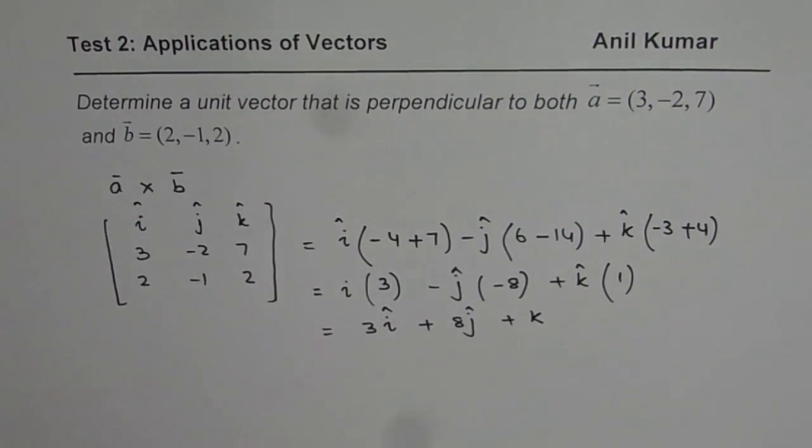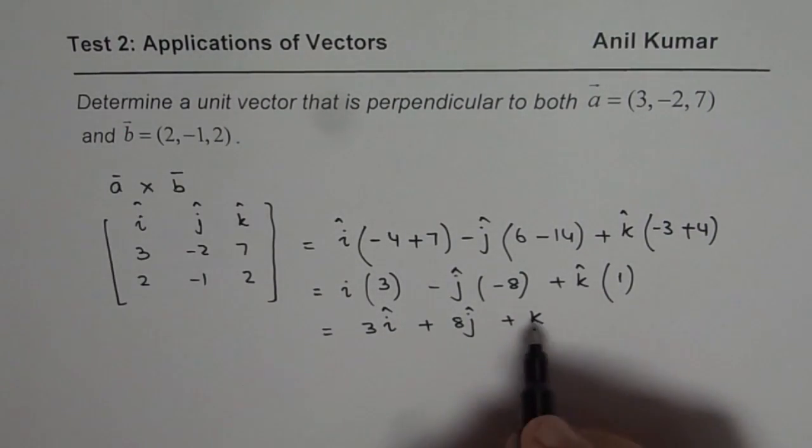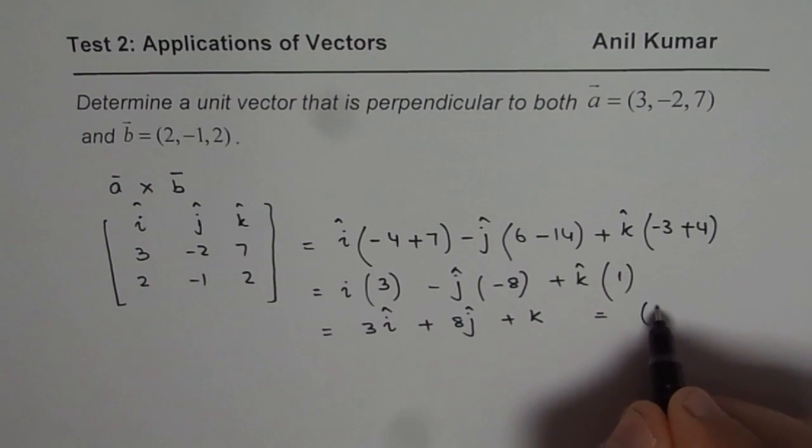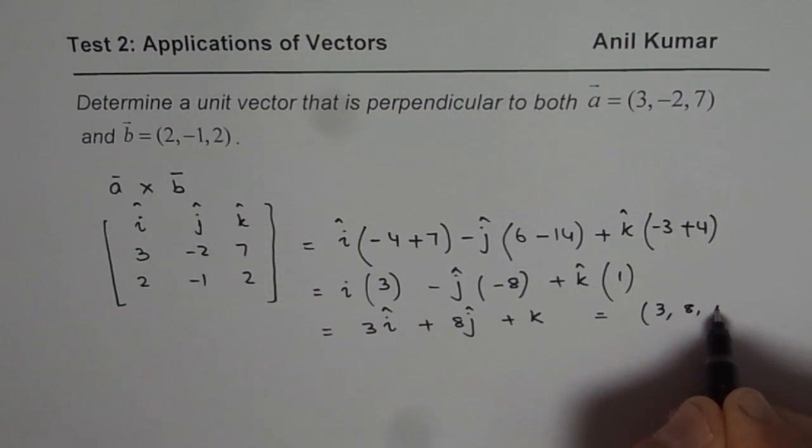So that is the vector, and in this form we could write this vector as (3, 8, 1).